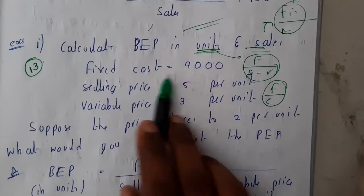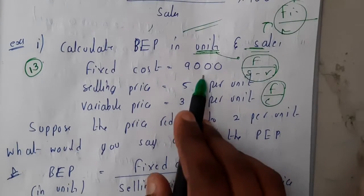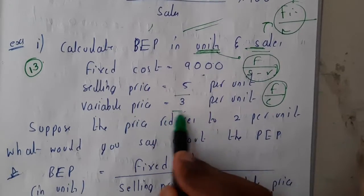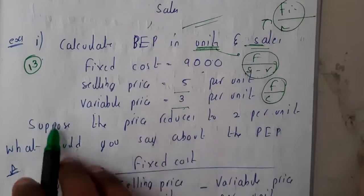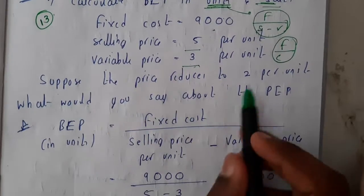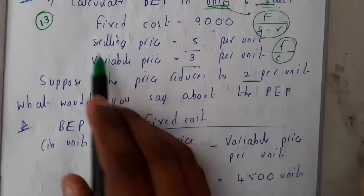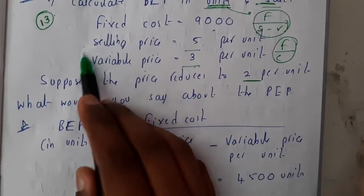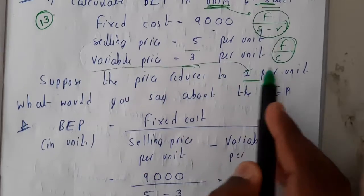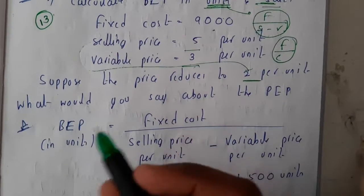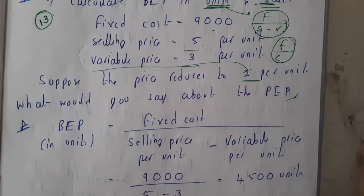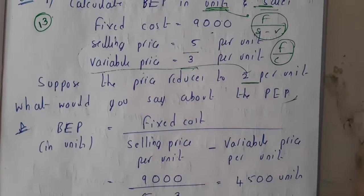In this question, fixed cost equals 9,000, selling price is 5, and variable cost is 3. Then suppose the selling price is reduced to 2 per unit — what would be the final result, whether it is profit or loss?